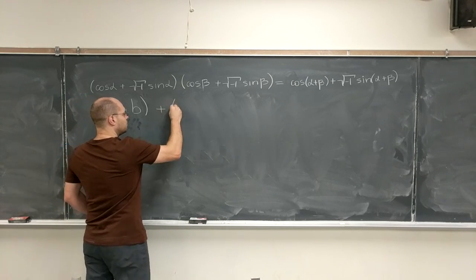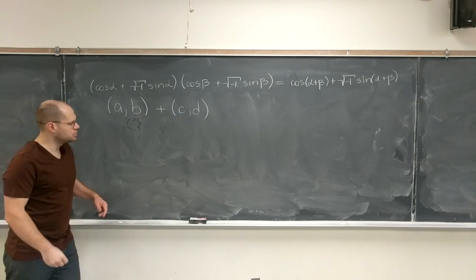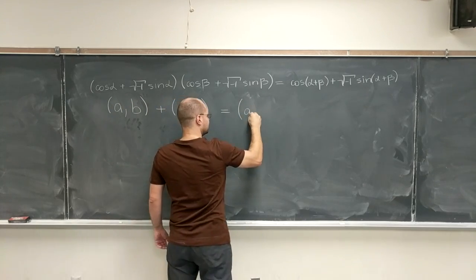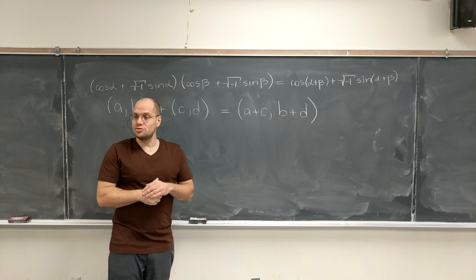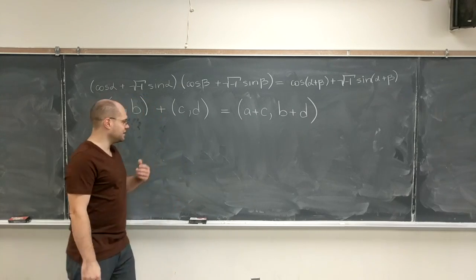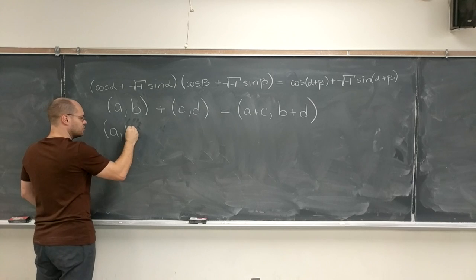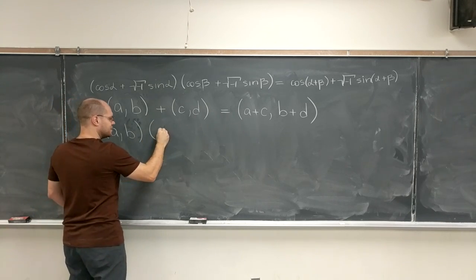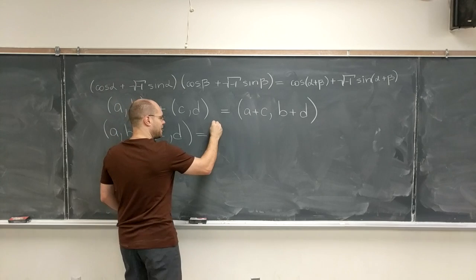When we add it to another complex number, we do it according to this rule. And now you also have to introduce multiplication. And he said, here's the rule, I'm postulating it. According to my rule, when you multiply this complex number by this one, the result is another pair.